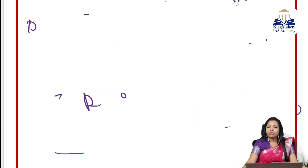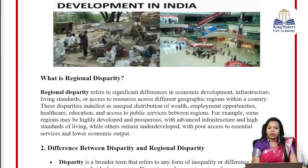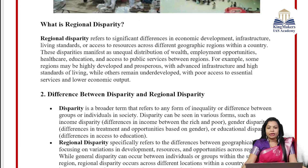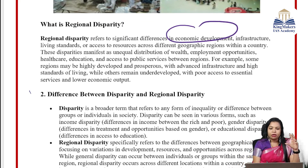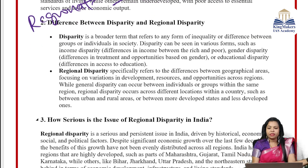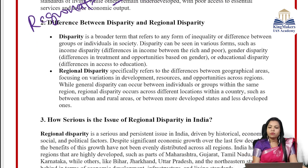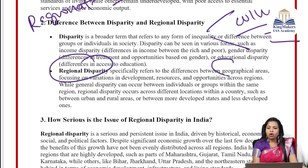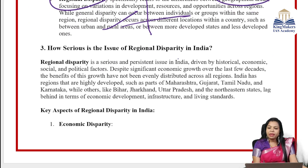Regionalism per se is both negative and positive. Positive regionalism — raising issues for your region — is not negative at all. Institutions like the NITI Aayog, Zonal Commissions, and Interstate Council exist to manage and promote balanced regional development. However, negative regionalism — seeing other regions as adversaries — is harmful. Income gaps, urban-rural divides, infrastructure development differences, and social human development disparities are indicators of regional disparity, as shown in the 2011 census data on literacy rates and development.